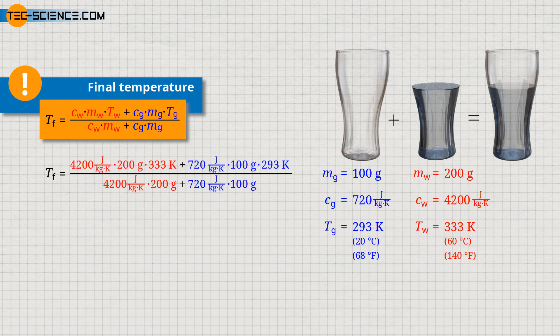If we put in these values, a final temperature of 330 kelvin results. This corresponds to a temperature of 57 degrees Celsius or 134 degrees Fahrenheit. In fact, we also get this result if we use the temperatures directly in the unit degree Celsius or degree Fahrenheit. Thus, when using this formula, the temperatures do not necessarily have to be given in the base unit kelvin.